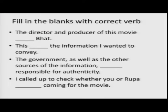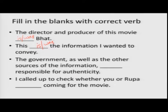Now let us look at these sentences and complete them. 'The director and producer of this movie ___.' Note that 'the director and producer' refers to only one person — there is only one article 'the' — so the verb should be 'is' or 'was.' 'This is the information I wanted to convey' — information is uncountable, so it takes singular: 'is' or 'was.' 'The government as well as the other sources of information ___ responsible for authenticity' — 'as well as' adds supplementary information, so we consider only the government: 'is' or 'was.'